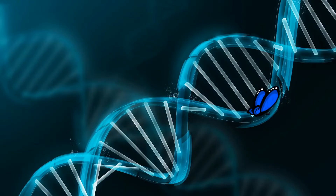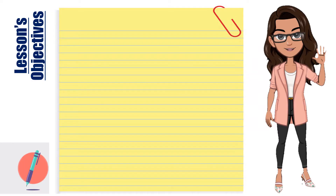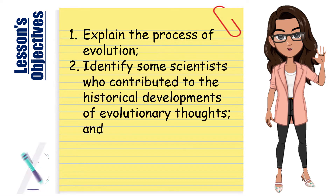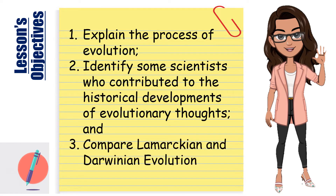My dear students, our lesson today is Lesson 7: The Process of Evolution. At the end of this lesson, you should be able to: explain the process of evolution; identify some scientists who contributed to the historical developments of evolutionary thought; and compare Lamarckian and Darwinian evolution.